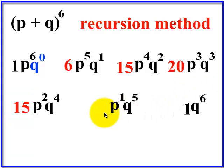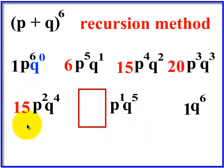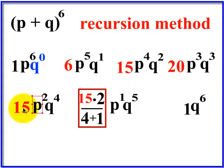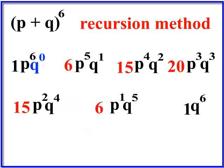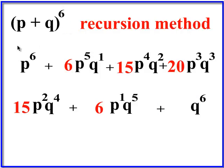For the next coefficient, you're always working from the term in front of the one you're doing. So it's 20 times three divided by three plus one — that's 60 divided by four, which is 15. Then 15 times two divided by four plus one — 30 divided by five equals six. And the last one is just one. So those are your coefficients. Throw in all the plus signs and we're done — that's way one.